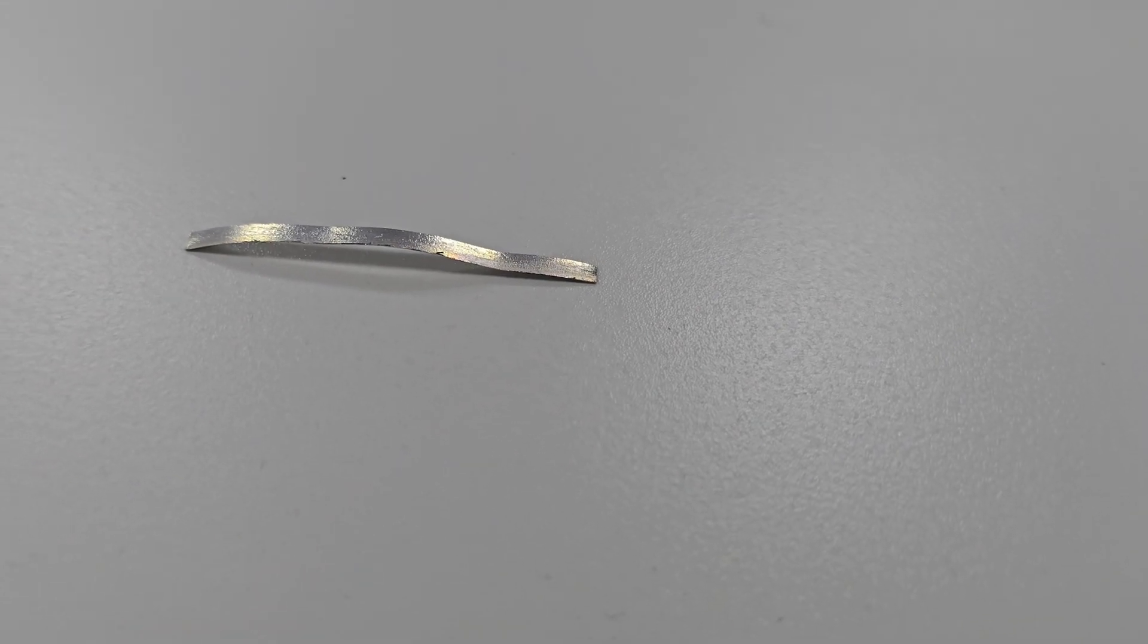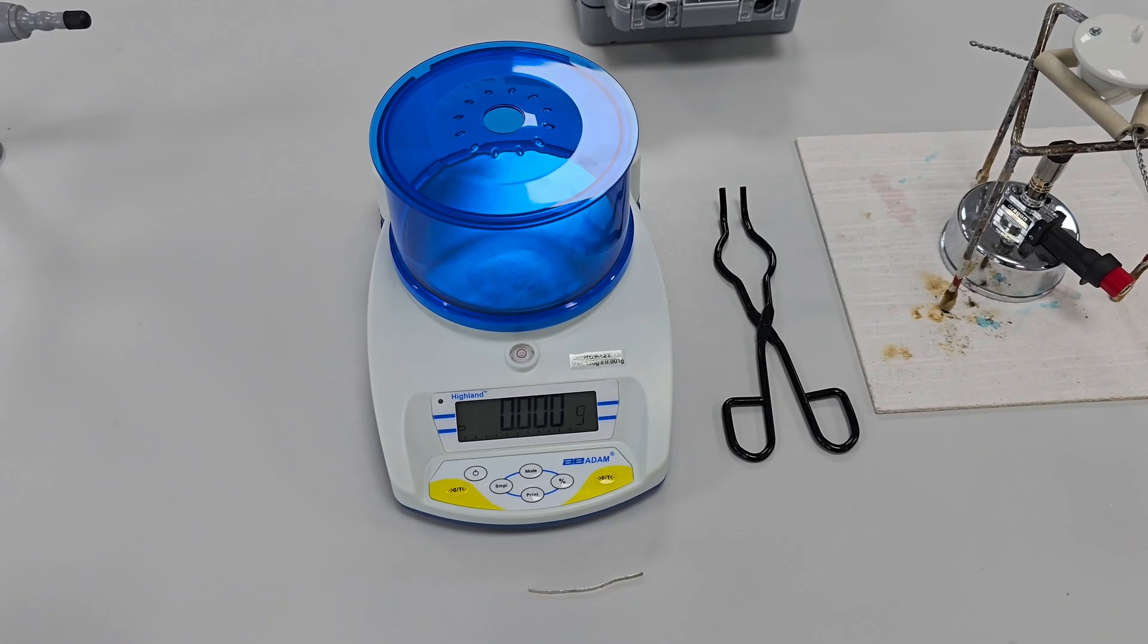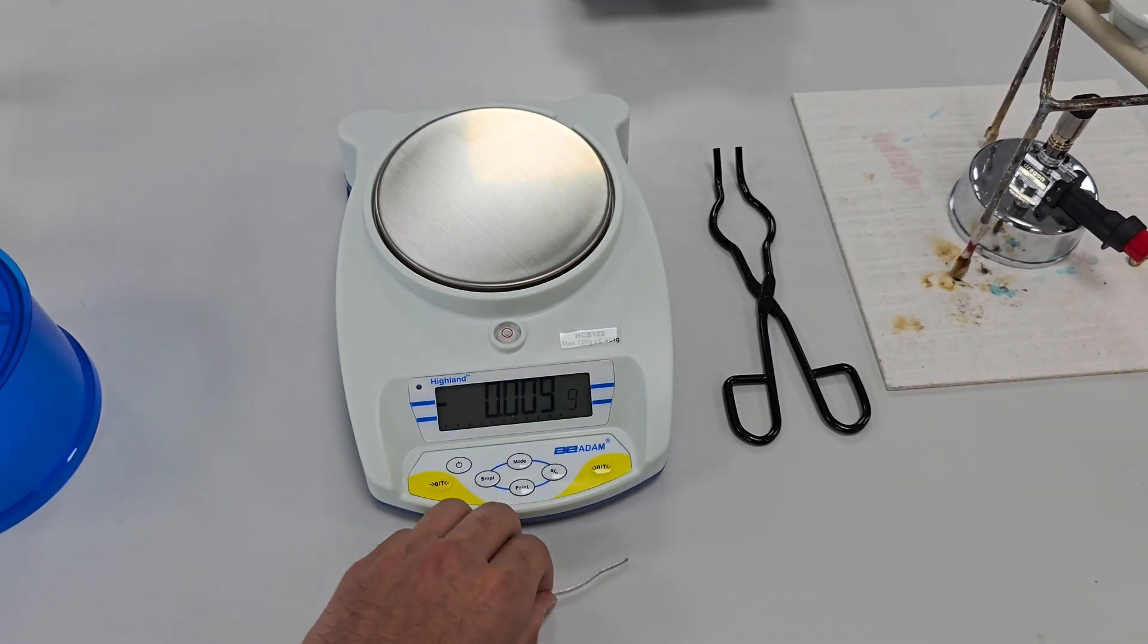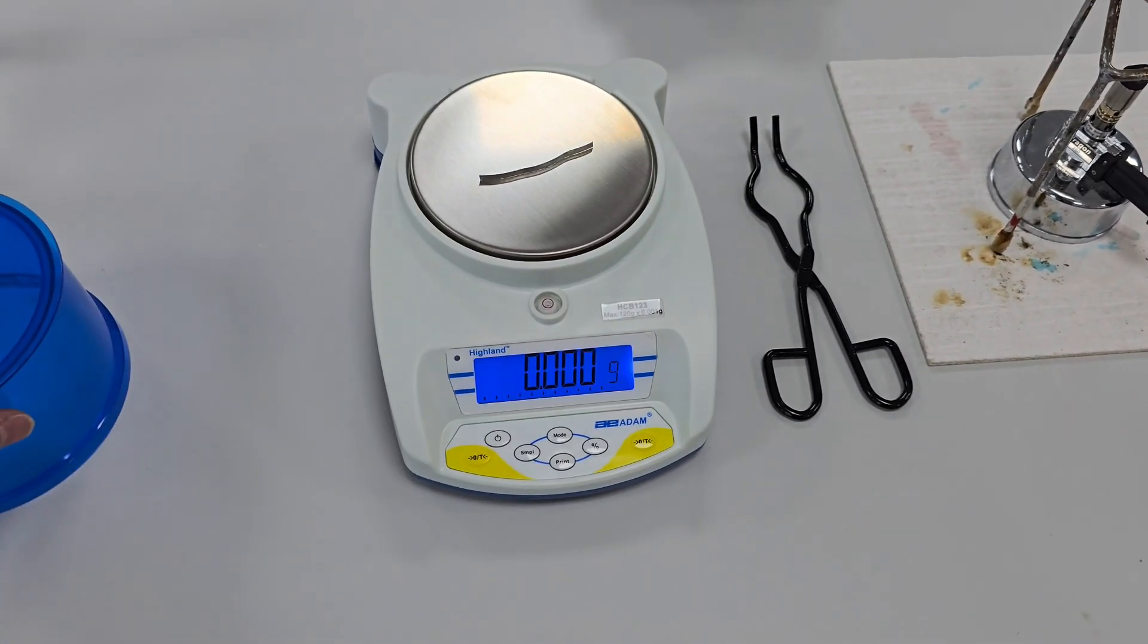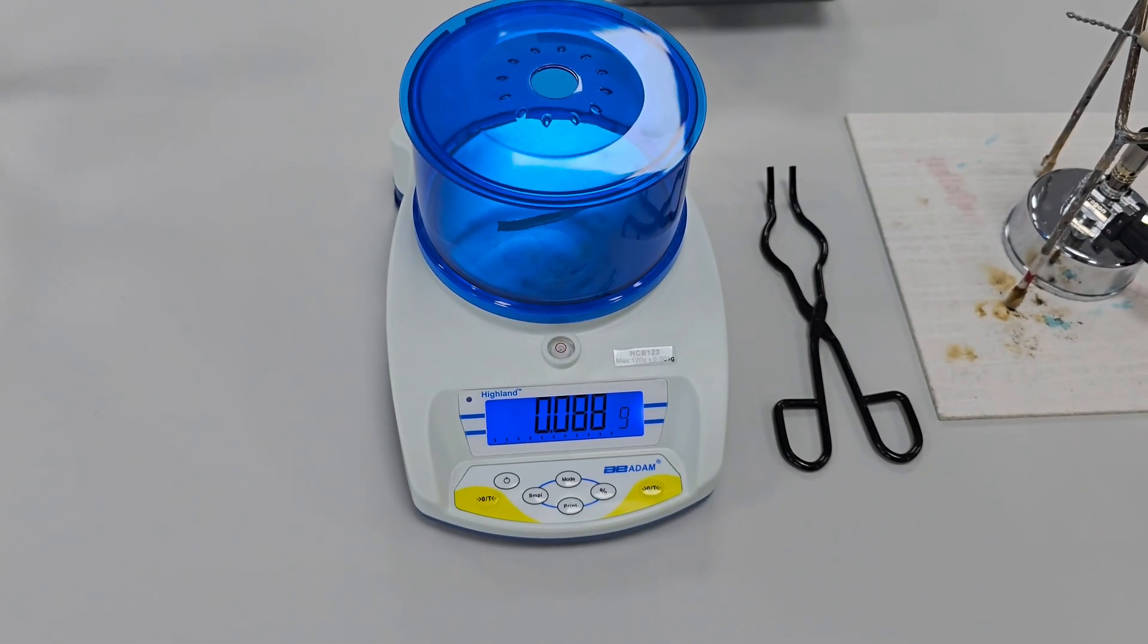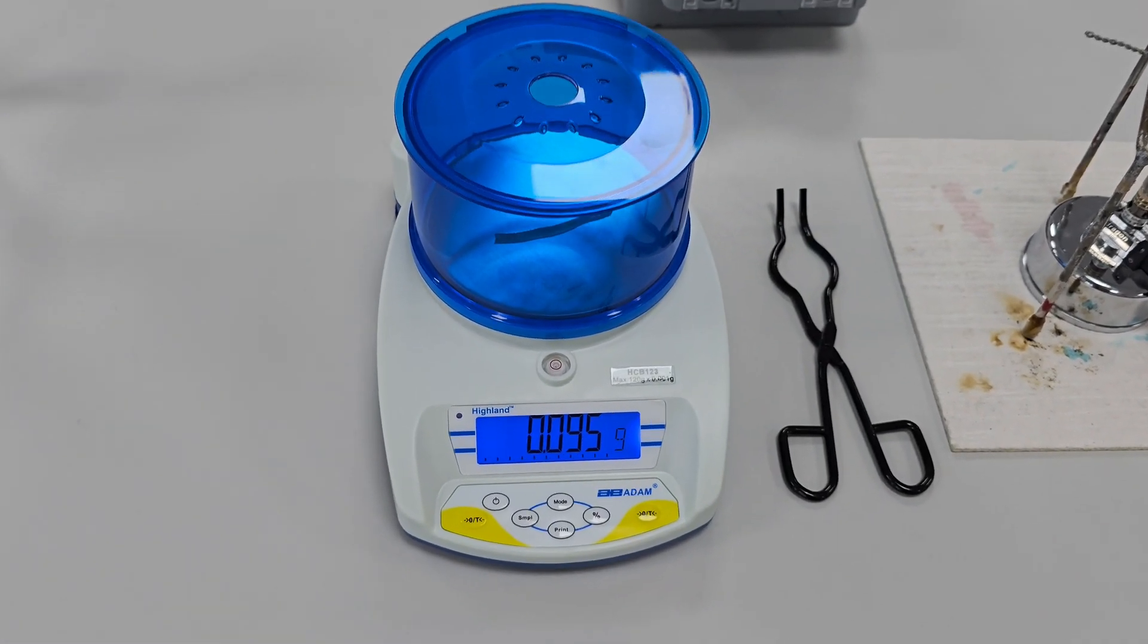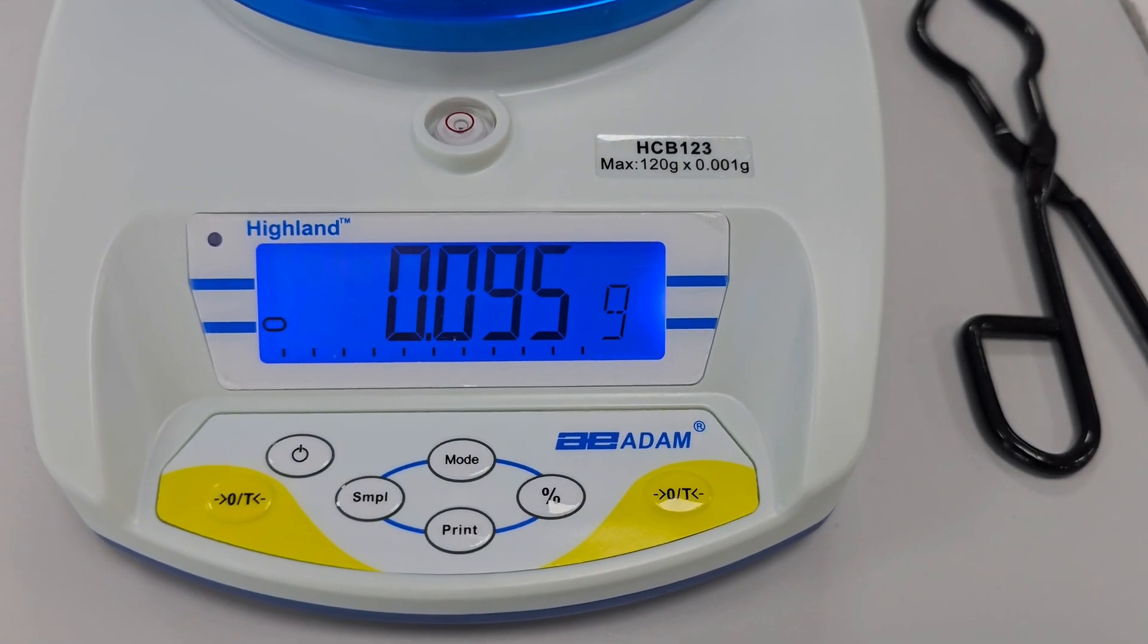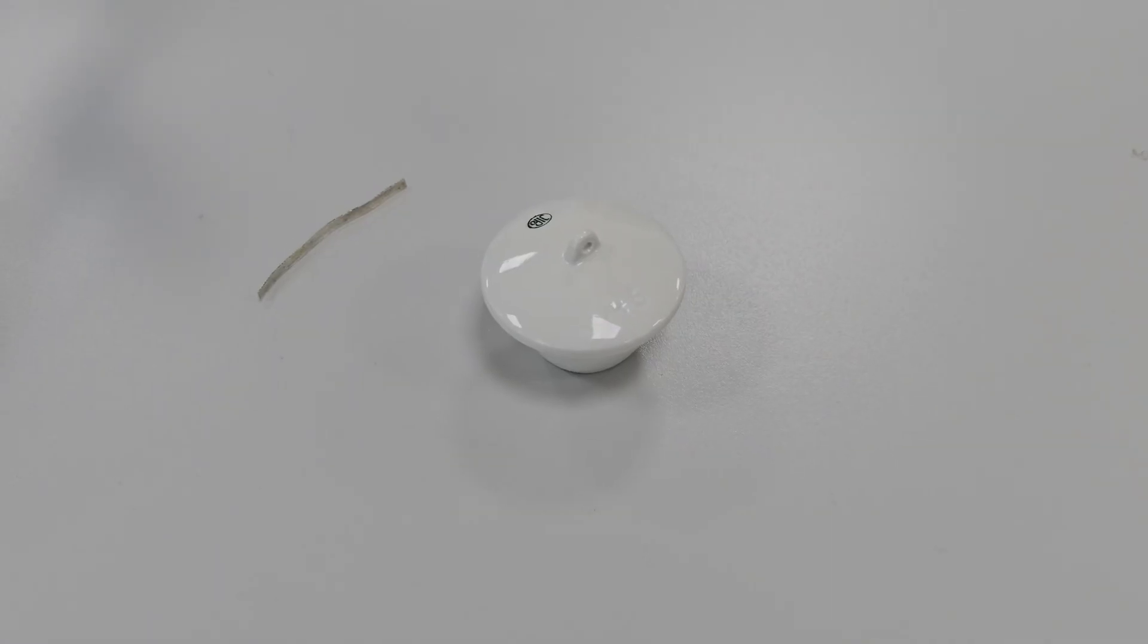Next I'm weighing a six centimeter strip of magnesium ribbon. It comes to 0.095 grams. We'll be heating this magnesium to react with oxygen and form magnesium oxide.